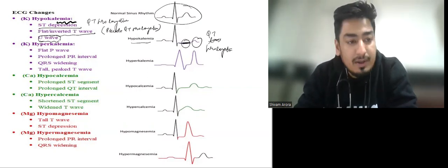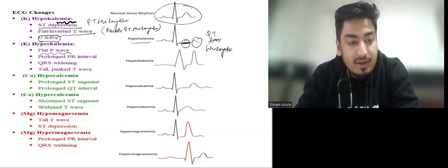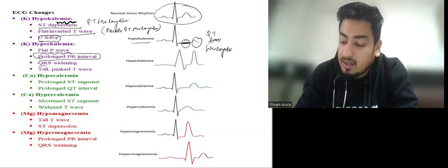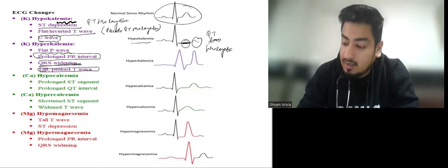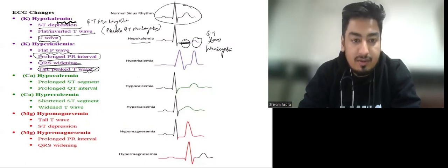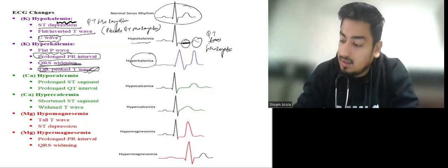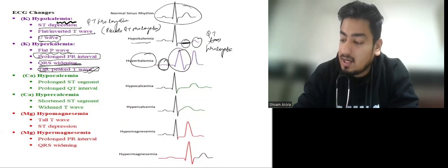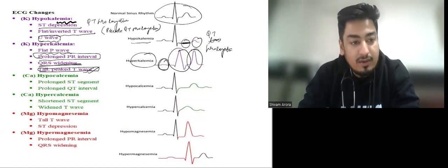For hyperkalemia, we have flat P wave, prolonged PR interval, QRS widening, and tall peaked T wave. The first change in hyperkalemia is a tall peaked T wave. Here we can see a broad QRS, flat P wave, and a tall T wave.